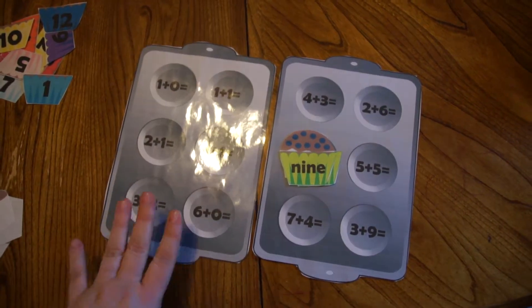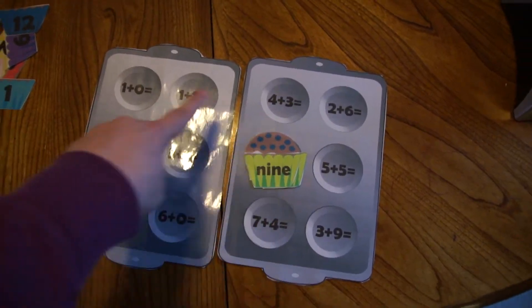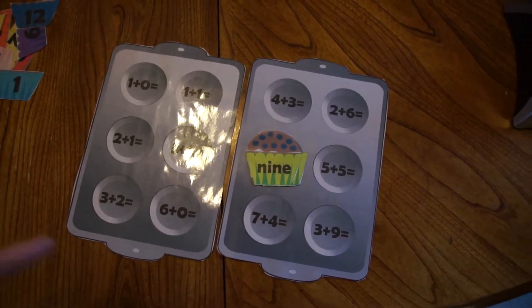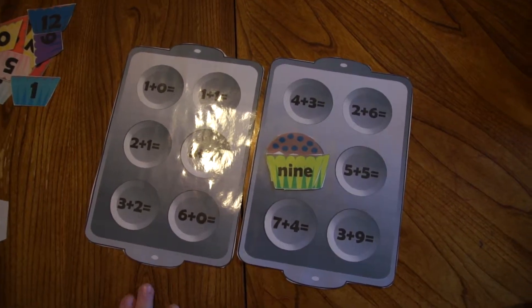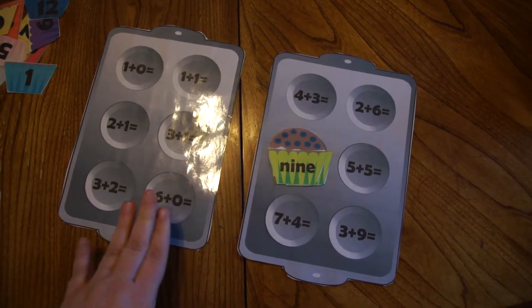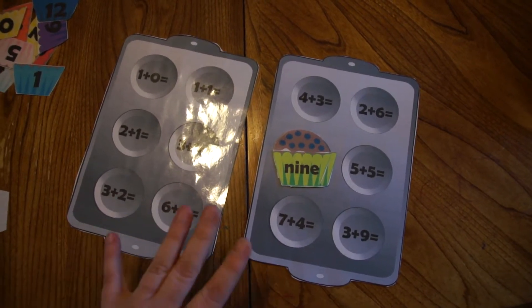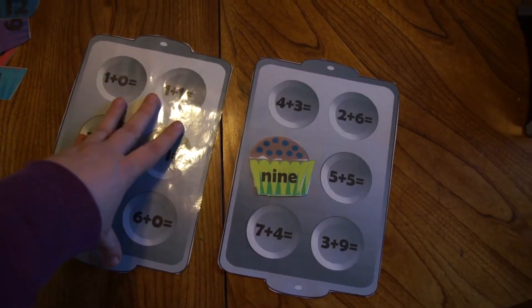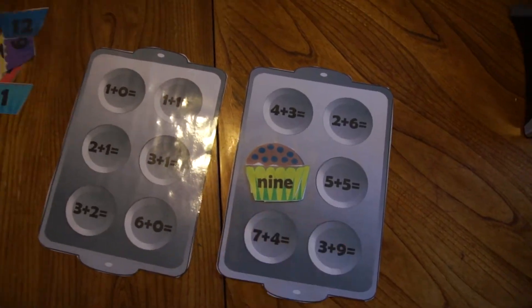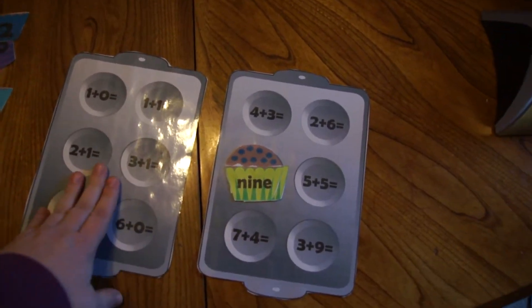This is also a great way to show kids dozens. So if you fill up both of these, you have 12, which is a dozen, which is a great concept to add. And then you can even start showing them a little bit of fractions if you want to, or showing them halves. I mean, that fraction is that you have half a dozen here and half of a dozen here. So six and six.